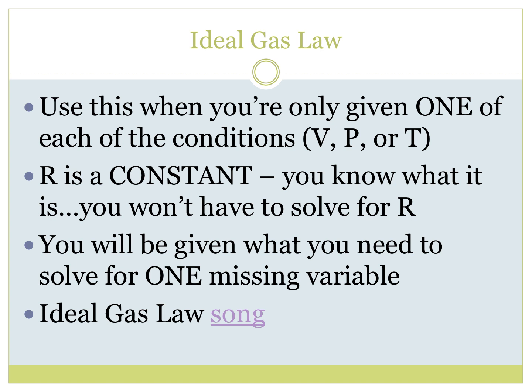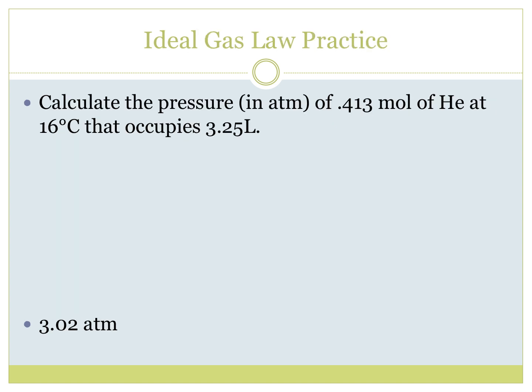So when do we use the ideal gas law? How do we decide which gas law we use? We use the ideal gas law when we're only given one of each of our conditions. So we don't have an initial volume and a final volume. If we're just given volume, we're going to use the ideal gas law. So R is a constant. We'll be given everything else except one variable to solve for. And then I've got a little song to help you remember ideal gas law, but we'll watch that later.